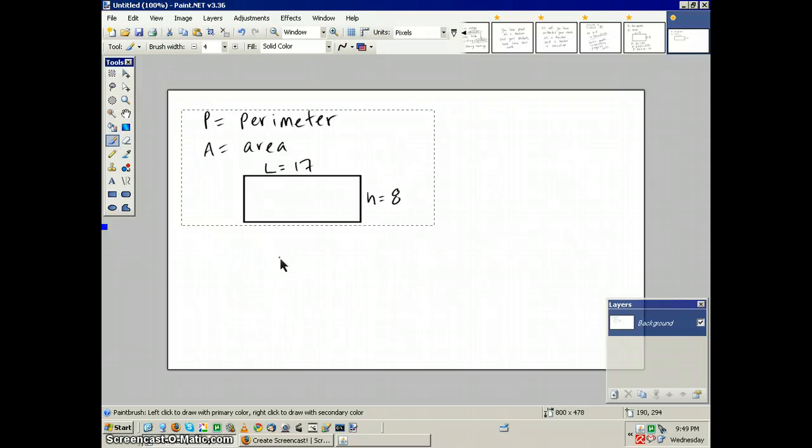So area of a rectangle is length times height. And now area equals length times, put the multiplication symbol there, times height.